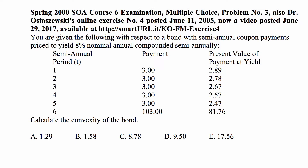We have a bond with semi-annual coupon payments, priced to yield 8% nominal annual compounded semi-annually, which means the effective interest rate per half-year is 4%. We have the payments and present value of each payment at that yield. Calculate the convexity of the bond.